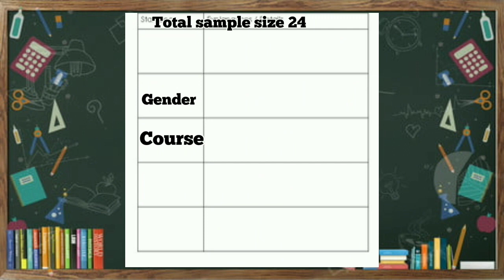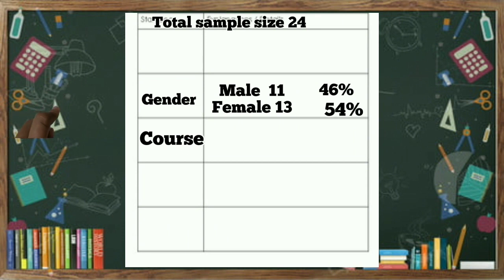So, how will do it when it comes to gender, out of the respondents, how many male and how many female? Let's say 11 male and 13 female. So, out of this 24 total sample size, 11 is male, which is 46% of the total sample size, and female is 54%.